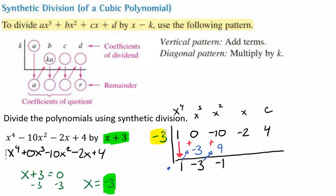And now we're going to multiply what is -3 times -1. And that's going to give us a positive 3. Then we're going to add those. And -2 + 3 is 1.